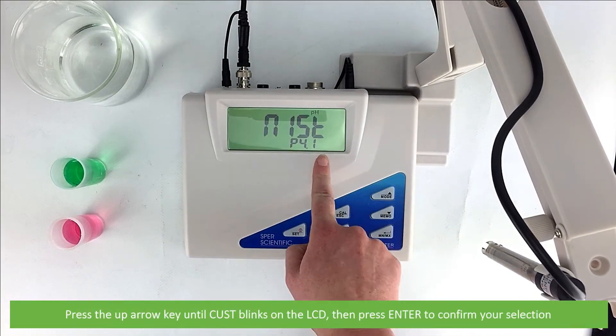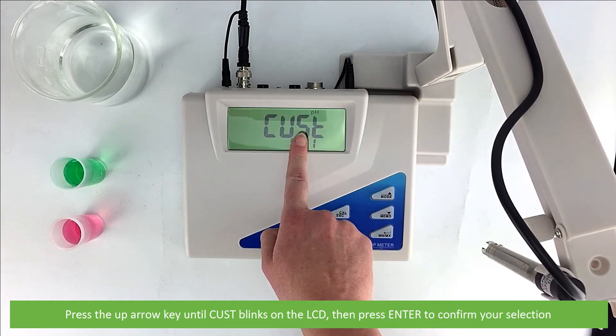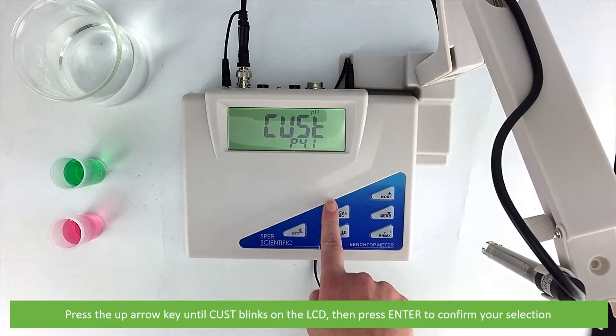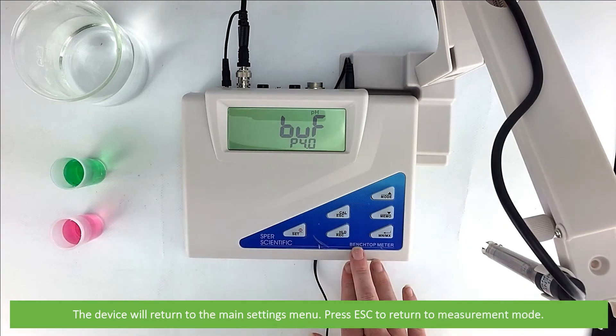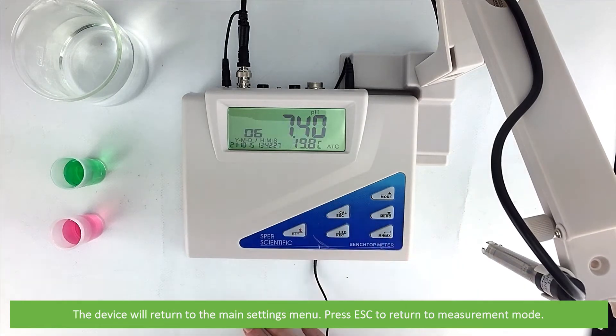Press the up arrow key until CUST blinks on the LCD, and press enter to confirm your selection. The device will return to the main settings menu. Press ESC to return to measurement mode.